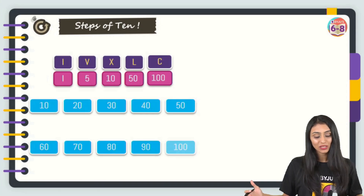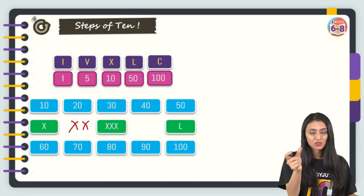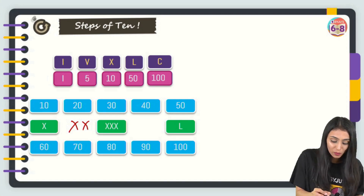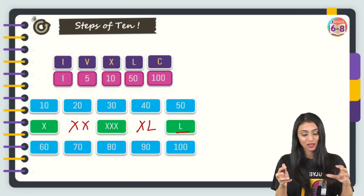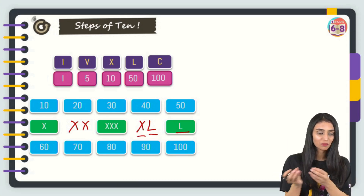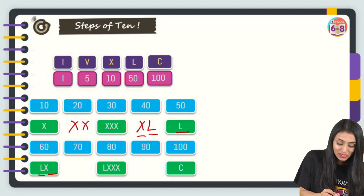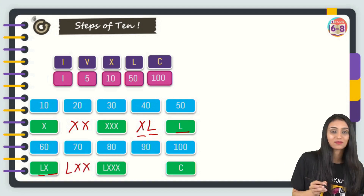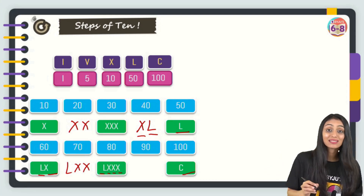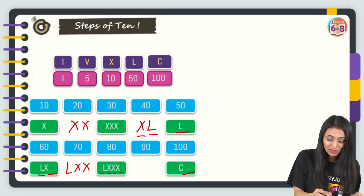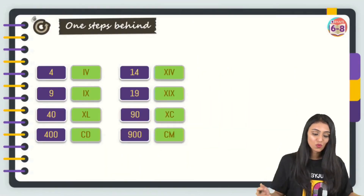For multiples of 10: 10 = X, 20 = XX, 30 = XXX. For 40, since L = 50, we write XL (50 minus 10). 60 = LX (50 + 10), 70 = LXX, 80 = LXXX. Since C = 100, 90 = XC (100 minus 10). Whenever you need to subtract something, write that symbol before the larger one.